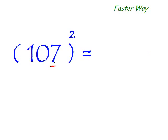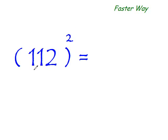So once again, add this distance from the base 100 to this entire number. 7 plus 107 is 114. Now two more digits to go. 7 squared is 49, so your answer is 11,449. That's it.